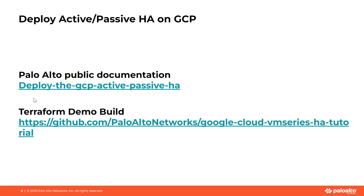Let's now understand how to deploy VM series in active-passive high availability mode. We have public documentation that talks about deploying VM series in active-passive high availability mode using Terraform templates that are available publicly as part of the Palo Alto GitHub repository. Let's see this in action.